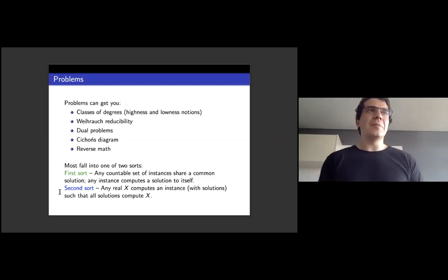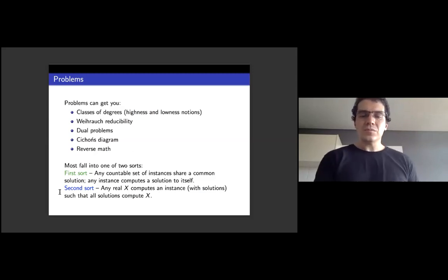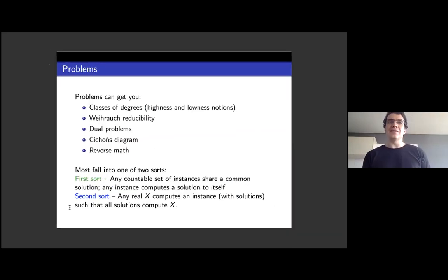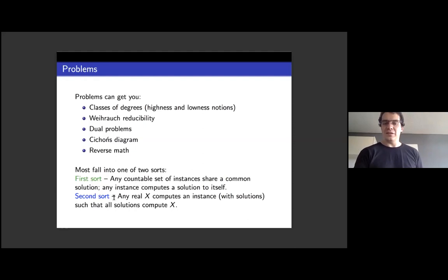The second sort are ones where it can be hard to find solutions — you can do coding. For any real, that real computes an instance such that every solution computes a copy of that real. The canonical example is trees: given any oracle, you can make the tree whose only path is that oracle, computed from the oracle. Domination doesn't have this coding property because there are hyperimmune-free reals. And trees don't have the amalgamation property — even two trees need not share a common path, and there are computable trees with no computable paths.